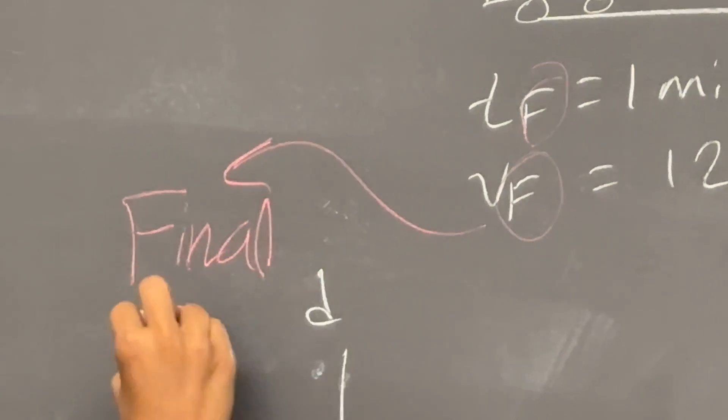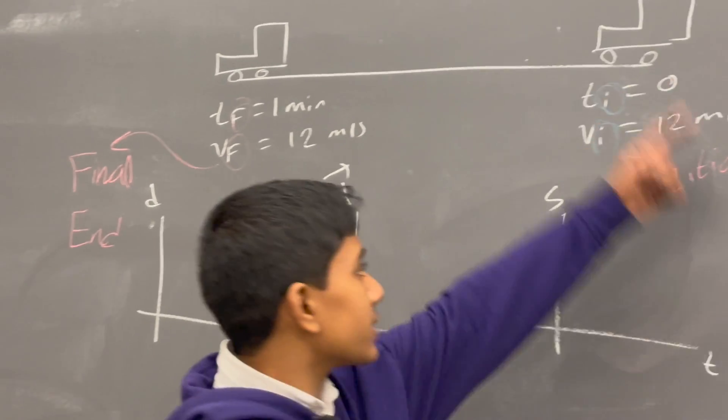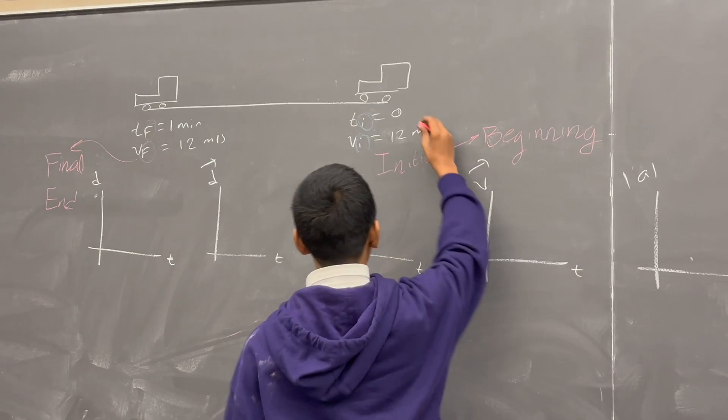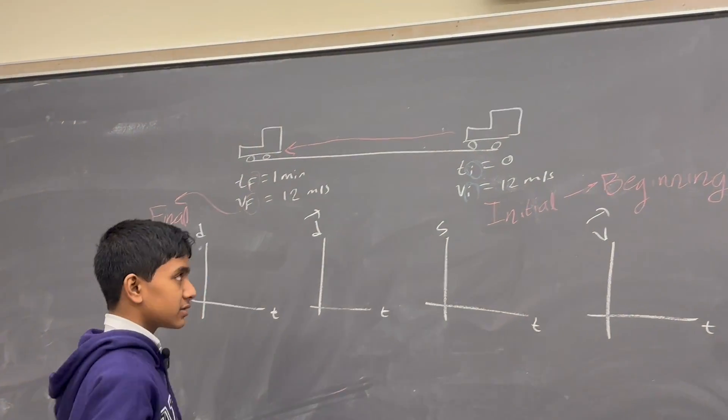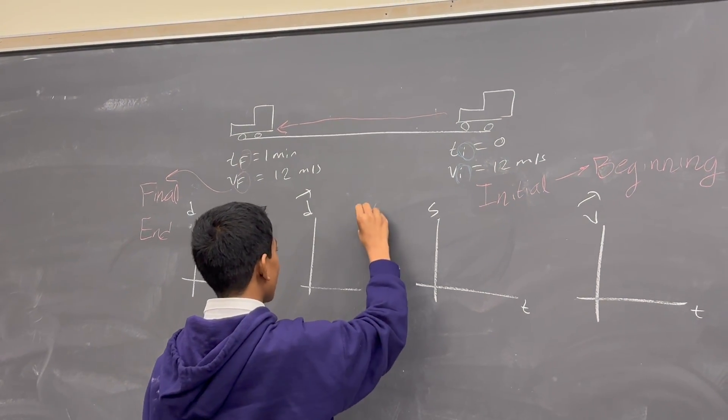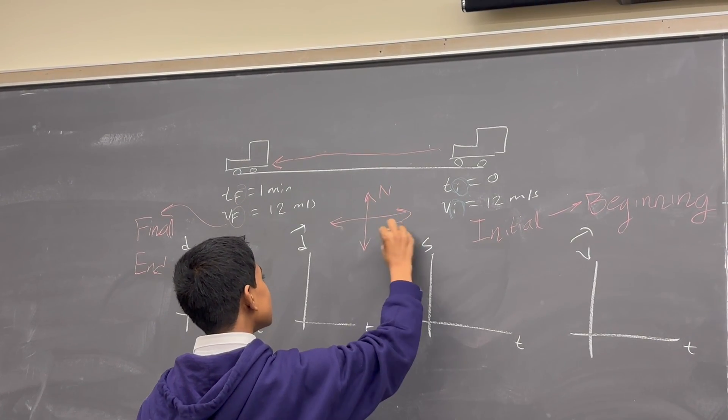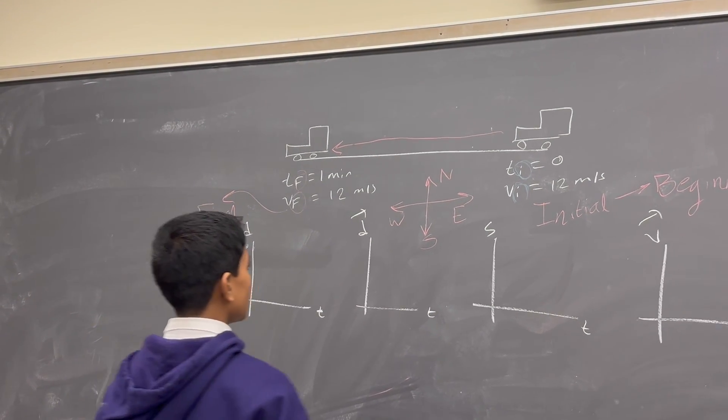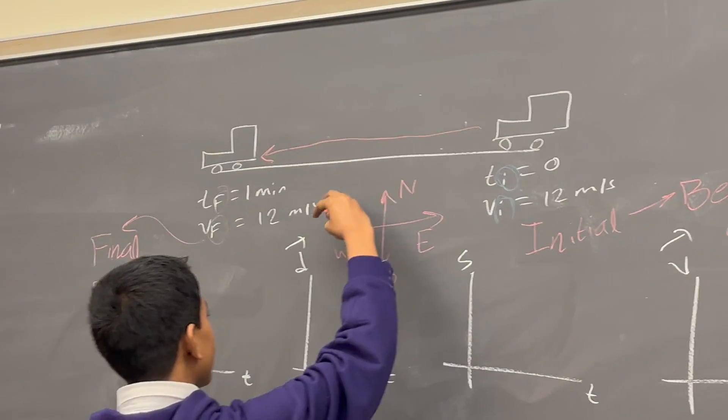It says f - what does f stand for? Final. What does final mean? End. That means this is the beginning and this is the end. So all you need to do is draw an arrow between where is the beginning and where's the end, then compare it to your four cardinal directions: north, east, south, and west. Which one is it parallel to? Well, it looks like the direction from beginning to end is going west.